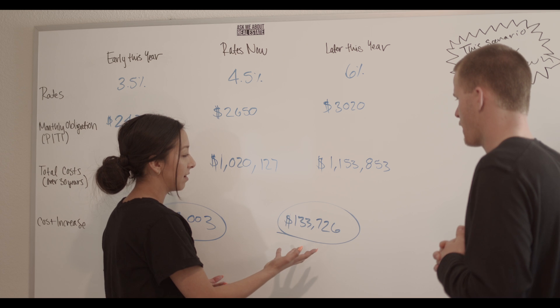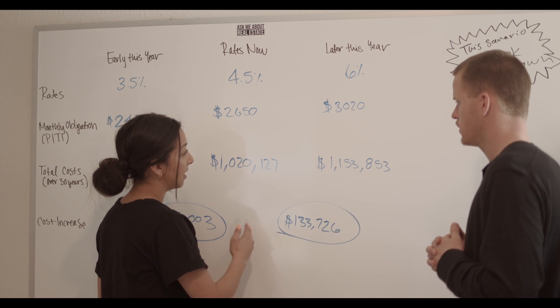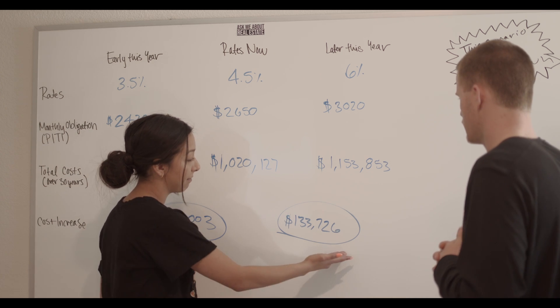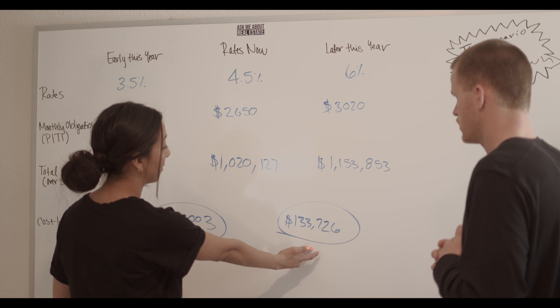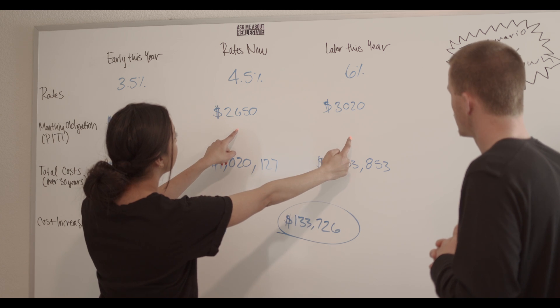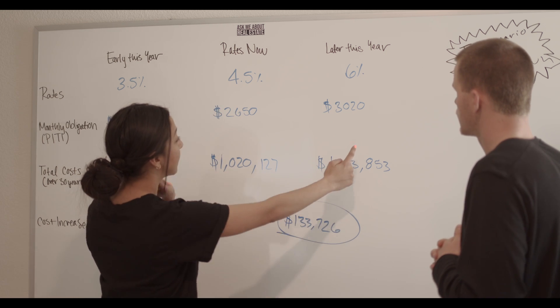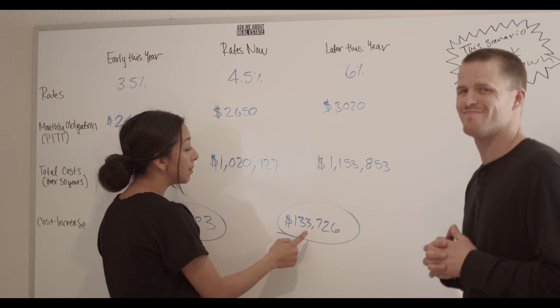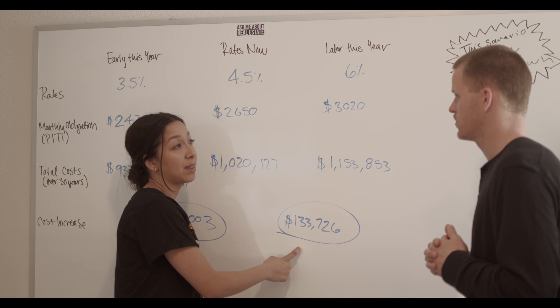Right. Where instead of waiting, maybe saving however much it may be, you could save another $133,000. So this is the difference here. Between 4.5% and 6% later this year, if you decided, okay, I want to buy now, you could be potentially saving yourself $133,000.